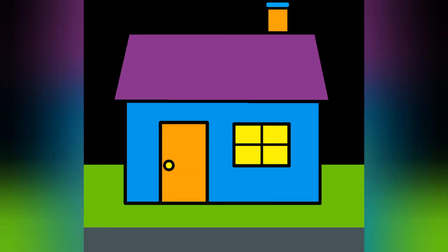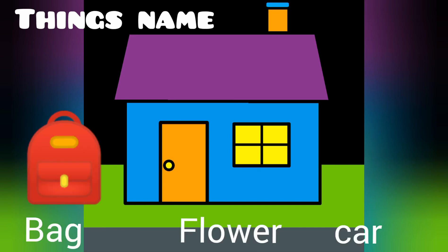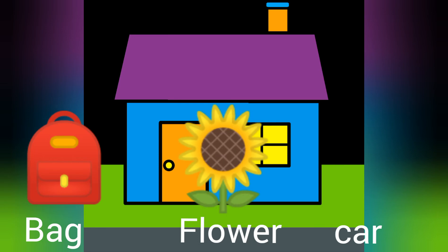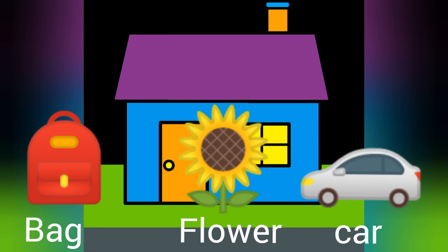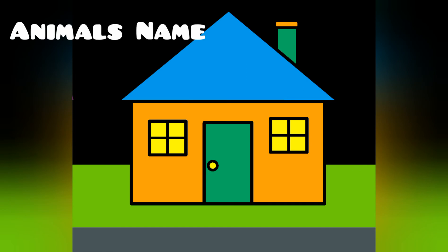In the next house there are things. From this house I have to select a bag, a flower, and a car. Our next house is names of animals. This one is a cat.